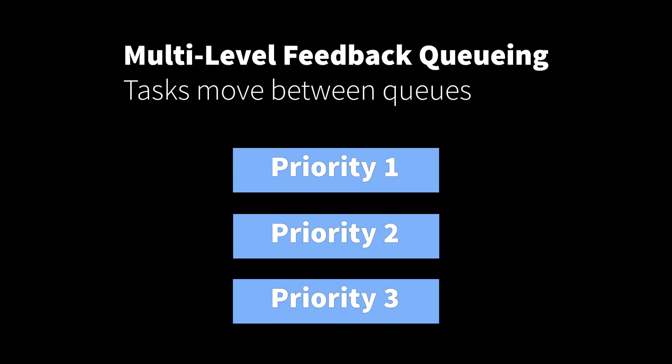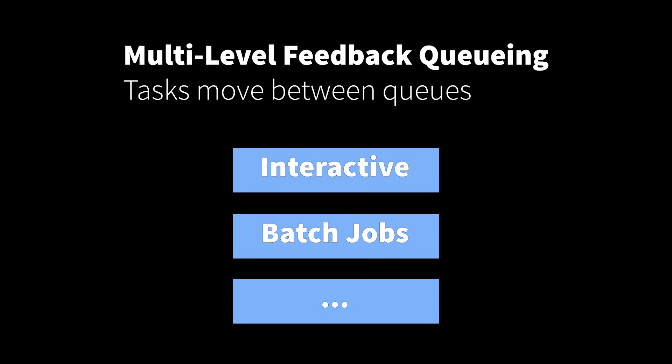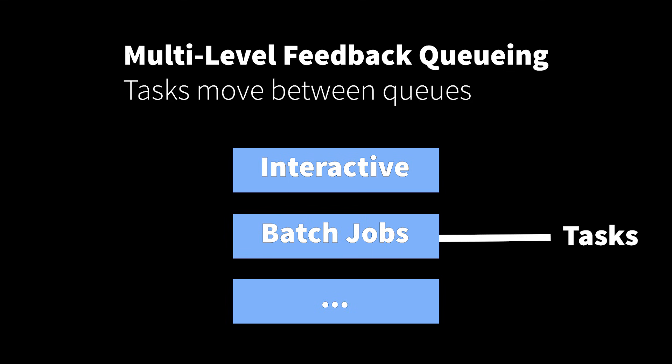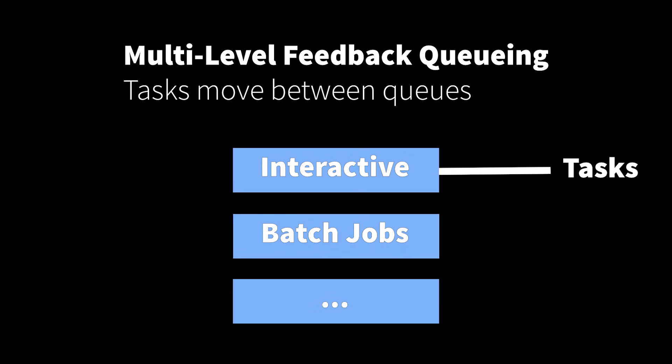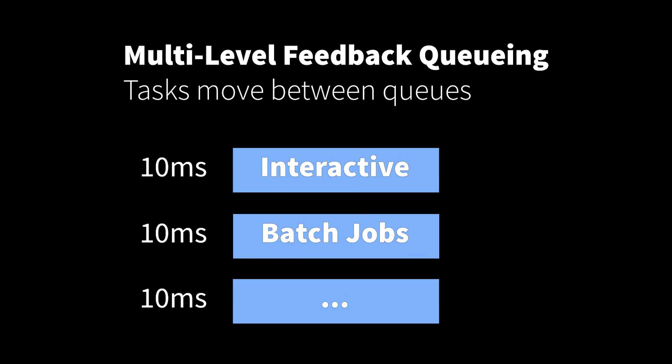A variation on this idea is called multi-level feedback queuing — it's really the same except you can move jobs from one queue to another. For example, to prioritize interactive processes, when a process starts you might initially put all its jobs in the high-priority queue. If it turns out to have really short tasks, you leave it there. If its bursts are really long, you move it down to the next queue. A process in a lower queue that starts issuing really short jobs could be bumped up to higher priority. Lower queues can also use longer scheduling quanta, so when you get down to those lower queues, you can give processes 80 milliseconds instead of 10, spending less time on switching and more efficiently processing computationally intensive jobs.